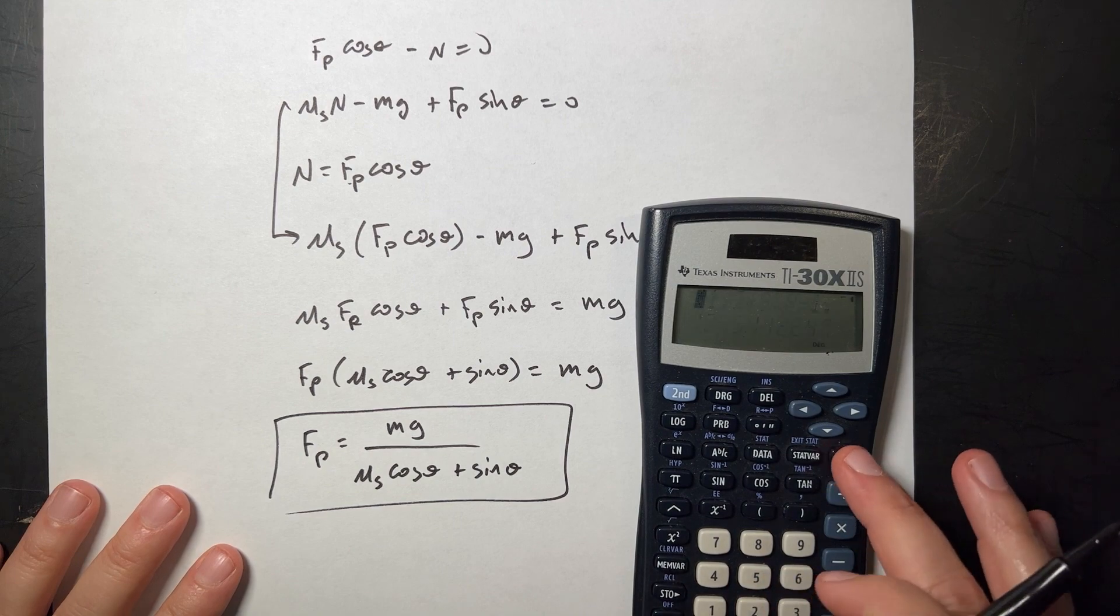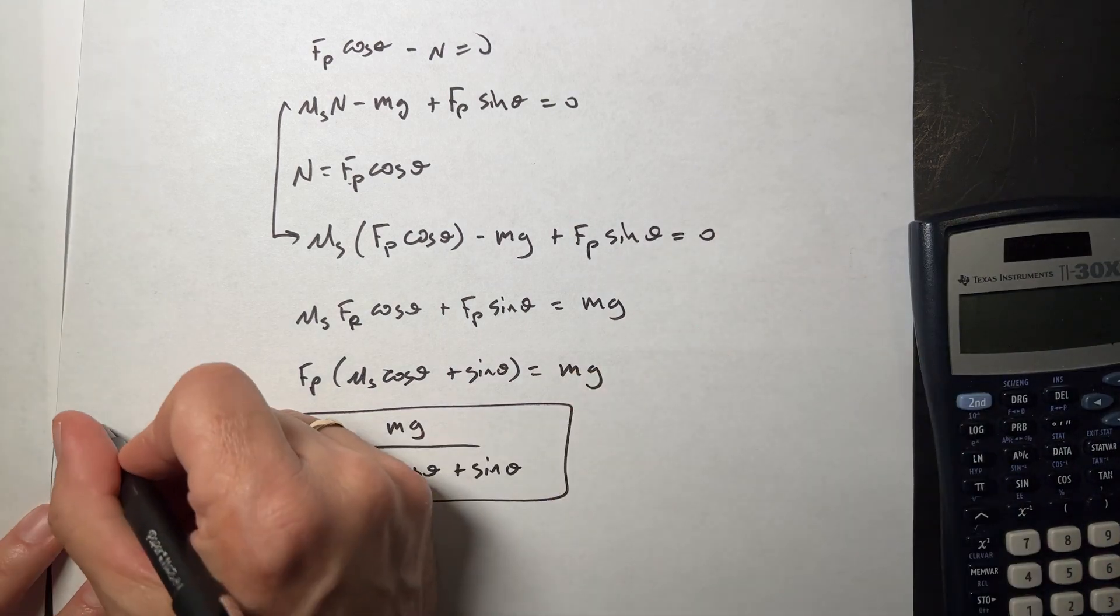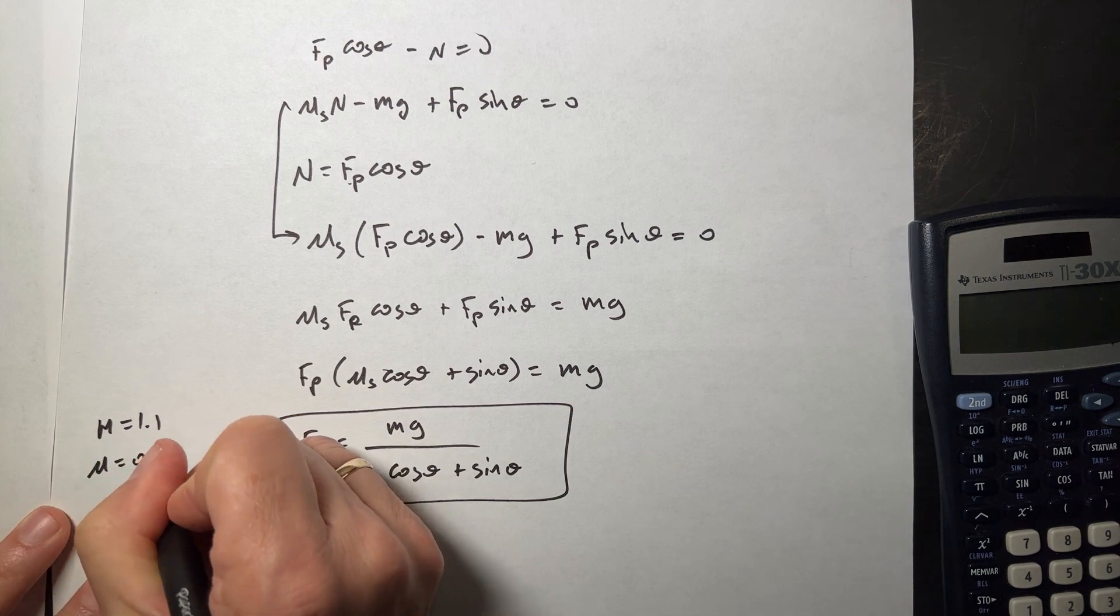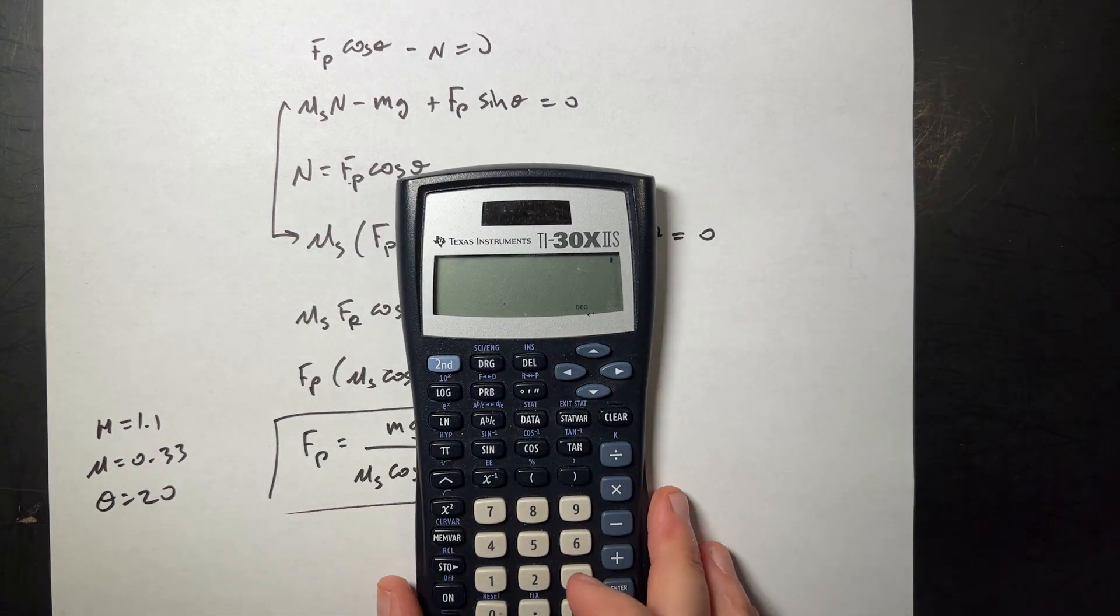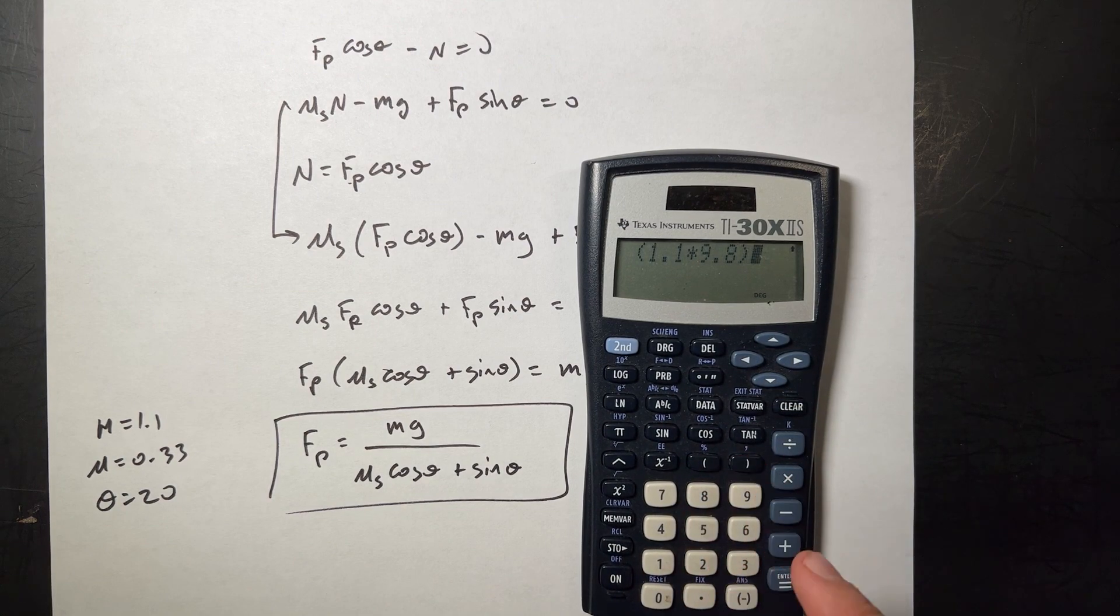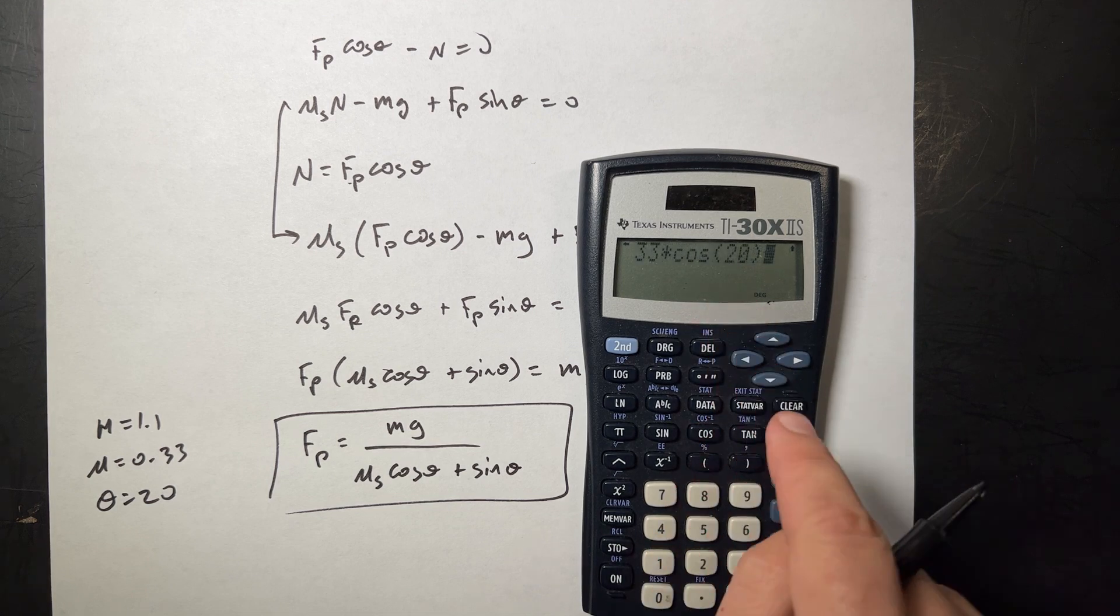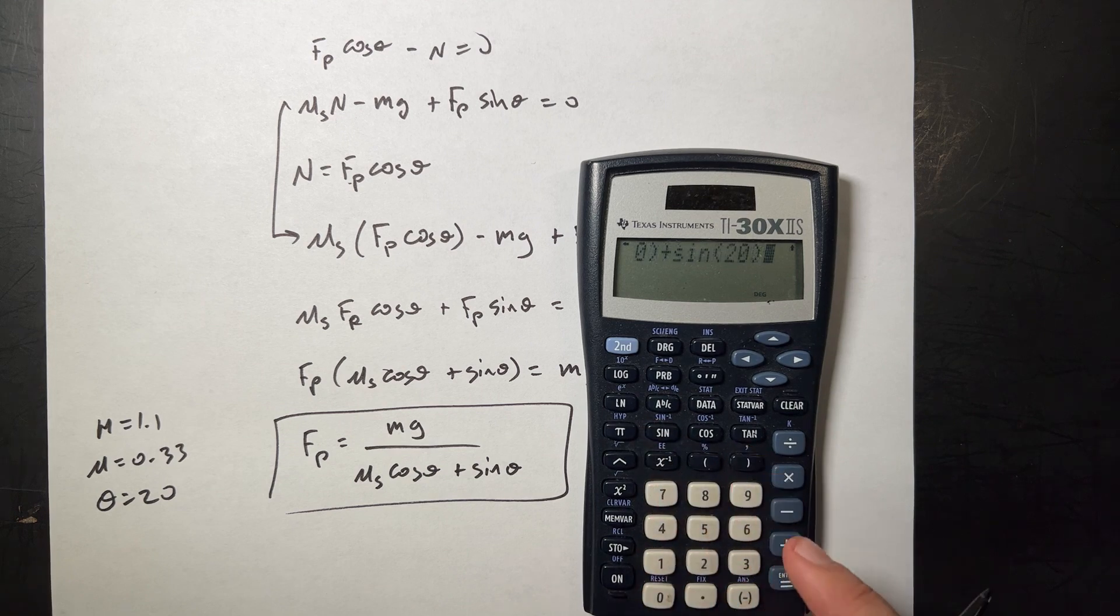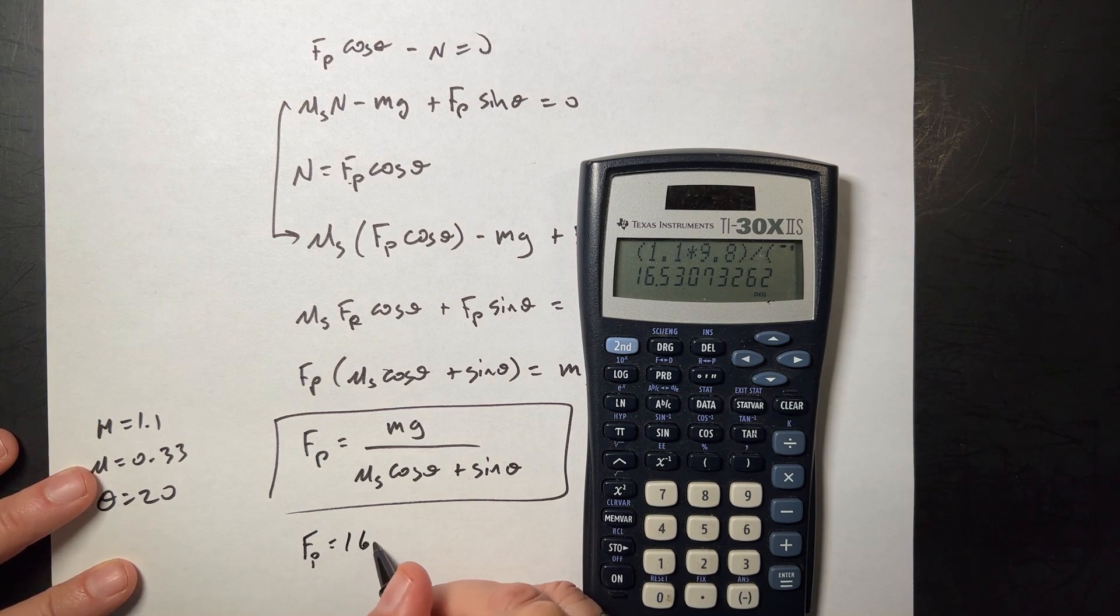So let's just put in our values. I had, what did I have? I had the mass of the book is 1. Let's write it over here. Here, m equals 1.1, mu equals 0.33, and theta is 20. Making sure my calculator is in degree mode. So I'm going to say clear parentheses mass 1.1 times 9.8, closed parentheses, divided by parentheses, mu 0.33 times cosine 20, closed parentheses, it gave me one of them, plus sine 20, closed parentheses for the sine, closed parentheses for the bottom, equals, and I get fp, this is the magnitude, 16.5 newtons.